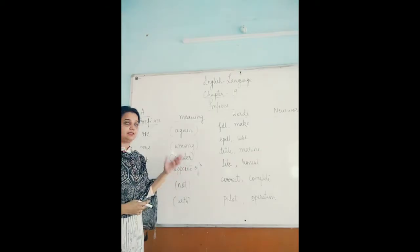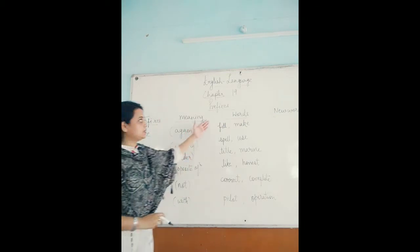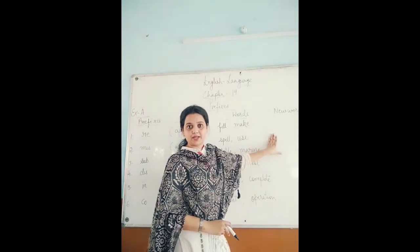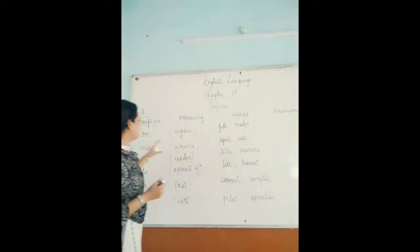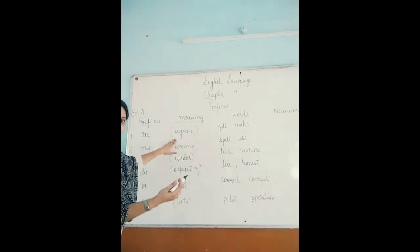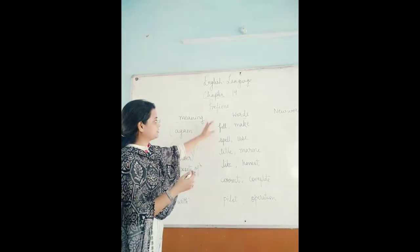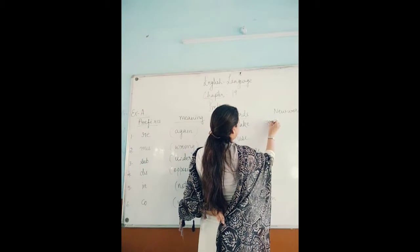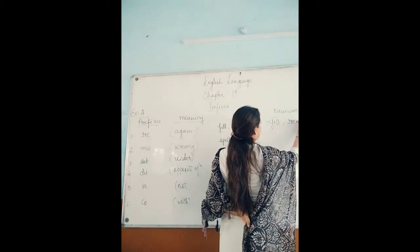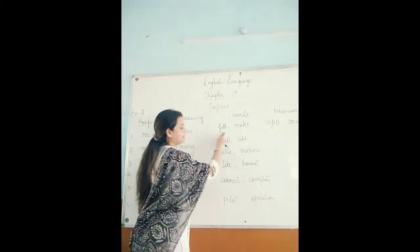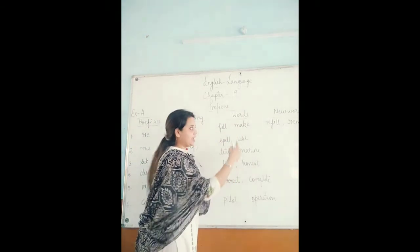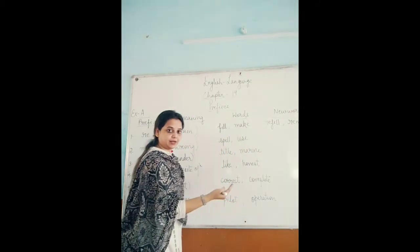Now let's do some examples showing how we add prefix to the word and get a new word with different meaning. The first one is re. Prefix re means again. If we add this prefix to the base word fill or make, we get new words: refill and remake. The word fill is converted into refill, which means to fill again, and remake means to make again.